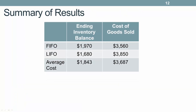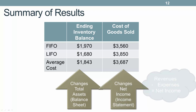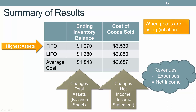Depending on the method used, we have a different balance in ending inventory and cost of goods sold. The ending inventory balance affects total assets on the balance sheet, and the amount in cost of goods sold ultimately impacts net income. When we are in periods where prices are rising — when we have inflation — FIFO ends up with the highest total assets and the lowest cost of goods sold.